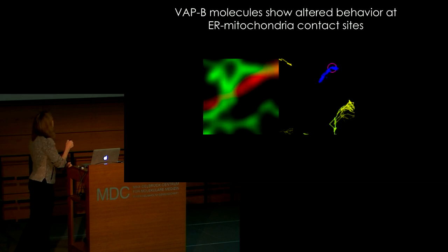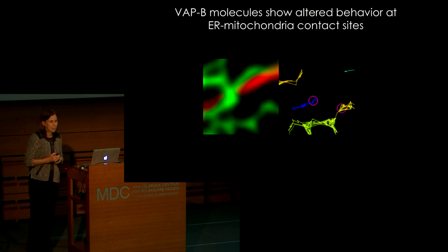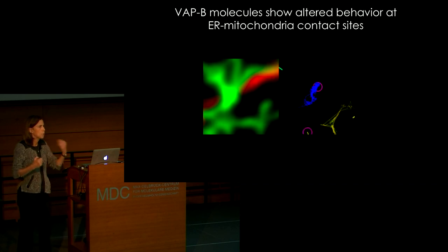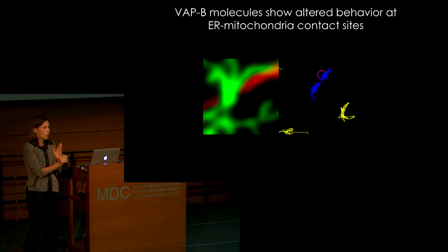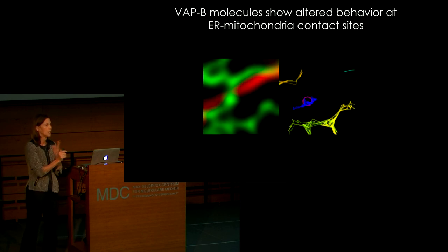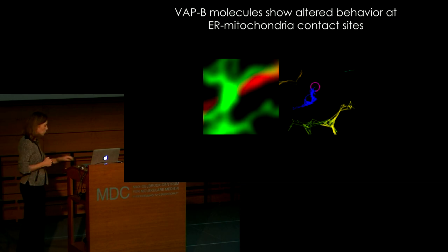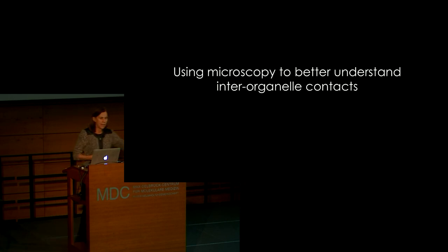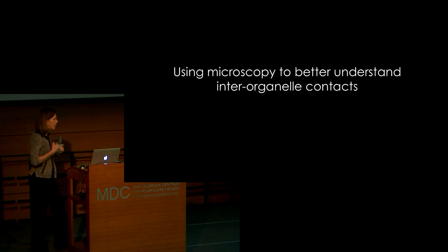VATB's ability to connect ER and mitochondria is thought to be important to allow the ER to release calcium into the mitochondria, and also to allow lipid transfer between ER and mitochondria. So it plays a really important role in cells. This got us excited about using various imaging strategies to get better insight into inter-organelle contacts.